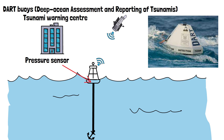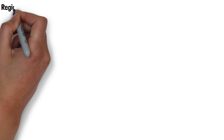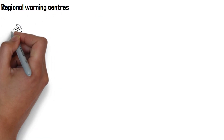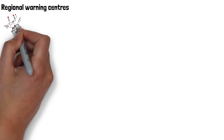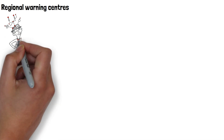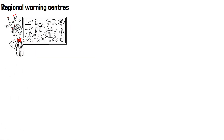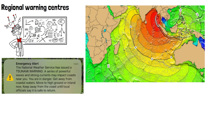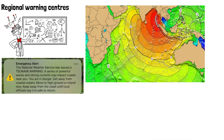Regional warning centers, like the Indian Ocean tsunami warning and mitigation system, analyze seismic and oceanographic data from the seismometers and buoys to assess the tsunami threat. The data allows them to create a projection of where the tsunami is likely to hit and what its impact will be based on size and speed. They issue warnings to the countries at risk and coordinate evacuation procedures.